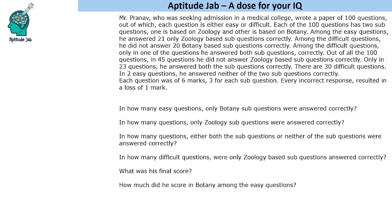This question can be solved by making a Venn diagram, because in some cases it is mentioned that he answered only zoology-based questions correctly, both, or neither. So what we will do is make two segregations: one for easy questions and another for difficult questions, and within each we will have a Venn diagram.